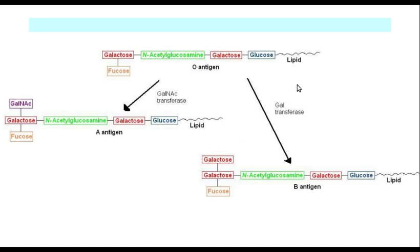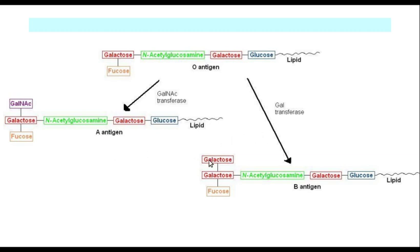Chemically, this is the structure of the H antigen. This H antigen is then acted upon by two enzymes. Some people have the N-acetyl-galactose transferase enzyme which attaches a molecule of N-acetyl-galactose to the H antigen to form the A antigen. There are people who have another enzyme called the galactose transferase which attaches a galactose molecule, converting the H antigen into the B antigen.